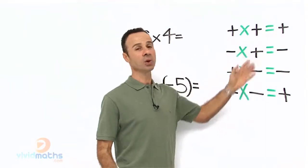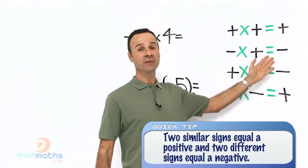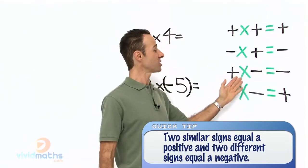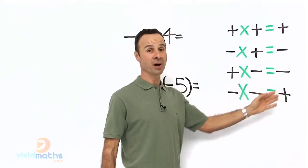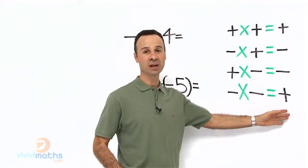We have plus times plus equals plus, minus times plus gives us minus, plus times minus gives us minus, and finally two minuses or two negative numbers give us a positive number.